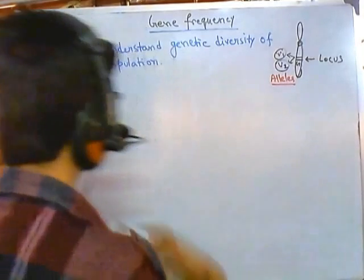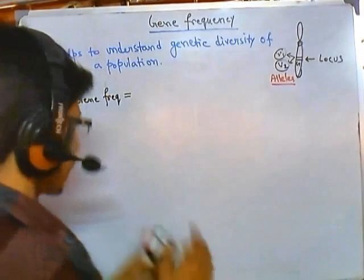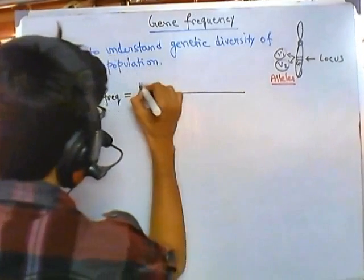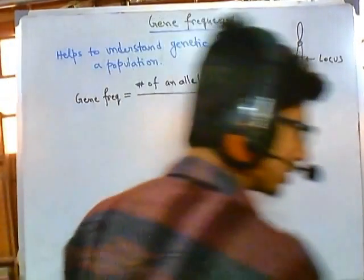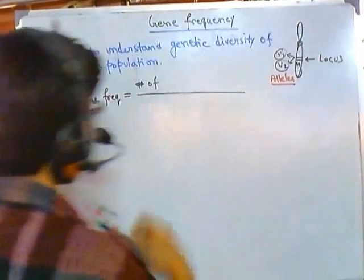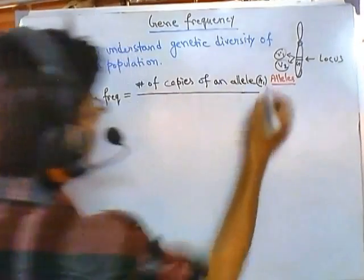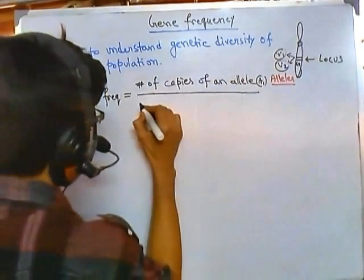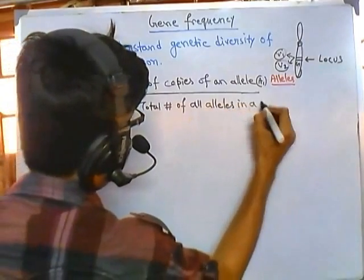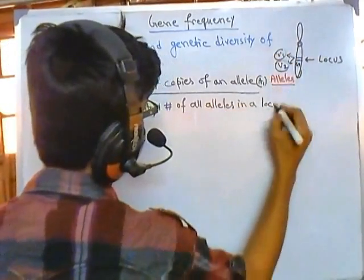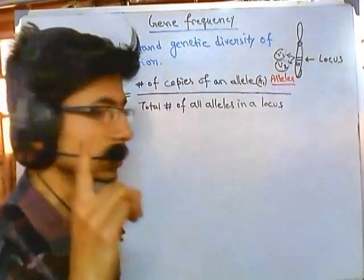Now, how do we calculate gene frequency? The formula is: gene frequency equals the number of copies of a particular allele — for example allele A1 — divided by the total number of all alleles at that locus.